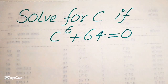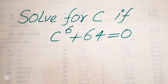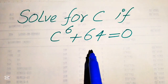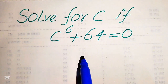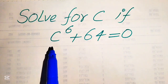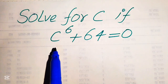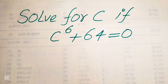Hello everyone, today I want to show you how to solve this problem for the values of c. We have c to the power of 6 plus 64 equals 0. We solve this problem for all six values, because this is a sixth-order equation, so we find all six roots.